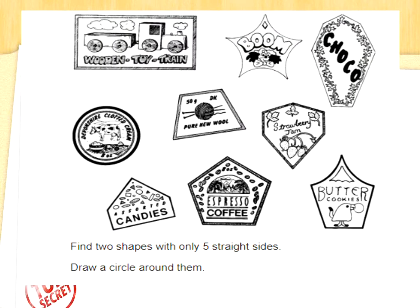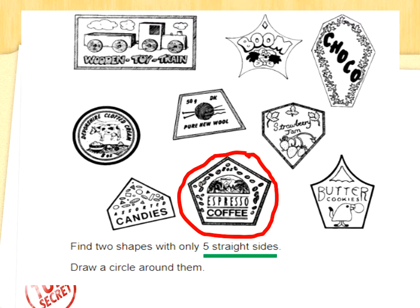Find two shapes with only five straight sides — draw a circle around them. Any with a curved side we can't choose. At the top we've got a four-sided shape — that's a rectangle, it can't be that one. The one with the wool in it is also a four-sided shape. Can you see any pentagons with straight sides only? There we go — straight sides, that's one with five sides. And the other one — well done if you beat Mrs G to finding those.